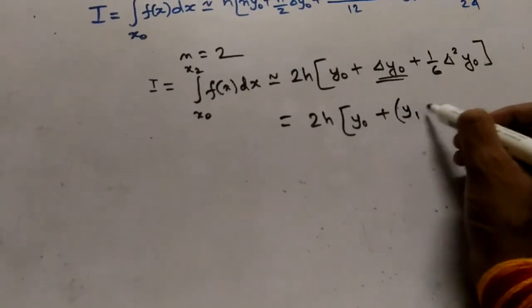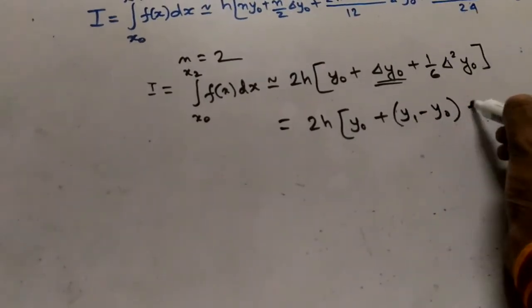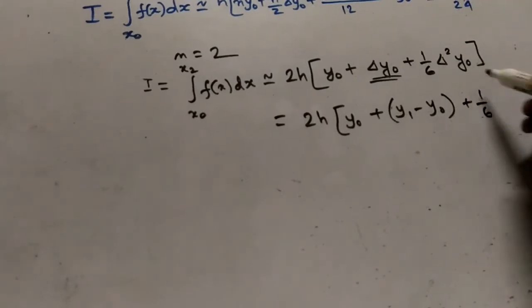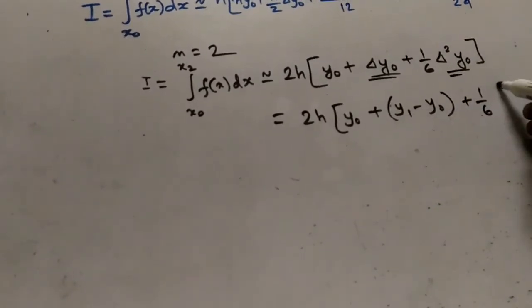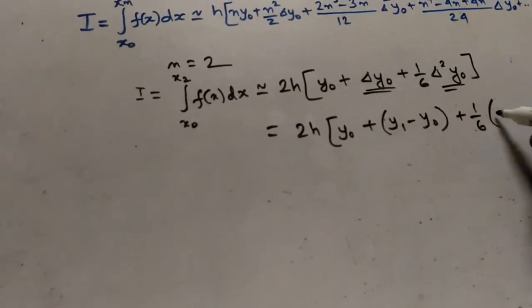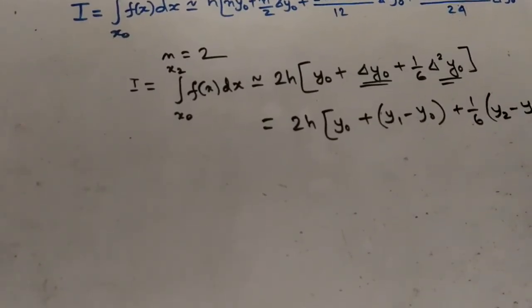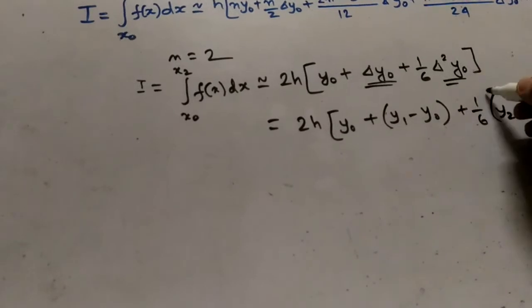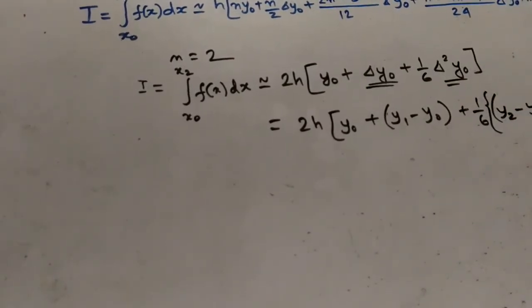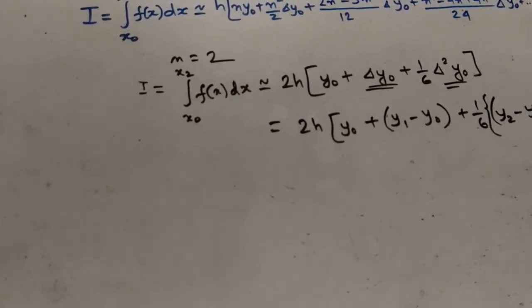And I will break this del square y0 term and write it as y2 minus y1 minus y0.